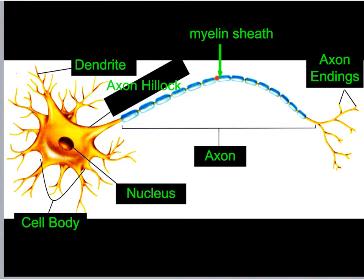Also label this structure the myelin sheath — put a parenthesis and write 'insulation, like the insulation of a wire.' I want you to start thinking about electrical signals being sent in our body. When I snap my fingers — and go ahead and snap yours too — how long does it take from when your brain thinks about snapping your fingers to when you actually snap them?